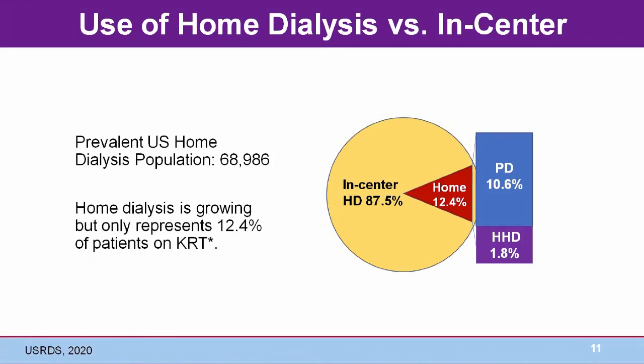The bottom line is that the number of patients doing home dialysis is currently only 12.4% of the total dialysis population. To reach 80% by 2025, as mandated in the 2019 executive order, requires a greater than five-fold increase in the additional number of patients doing home dialysis or receiving a transplant. Let's look at the science projecting the increase in the incident and prevalent kidney failure population through 2025 and beyond.